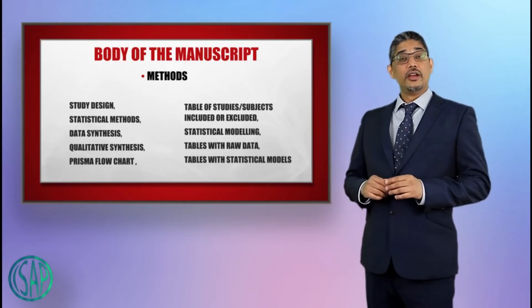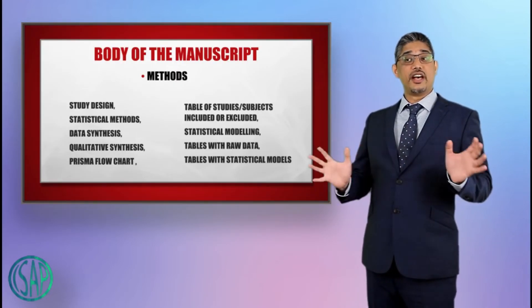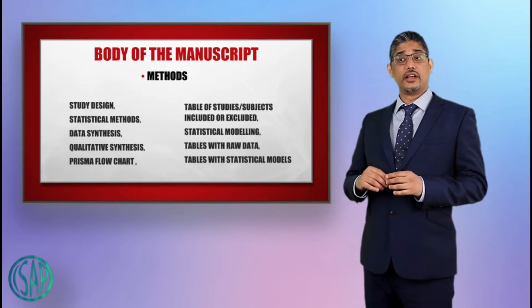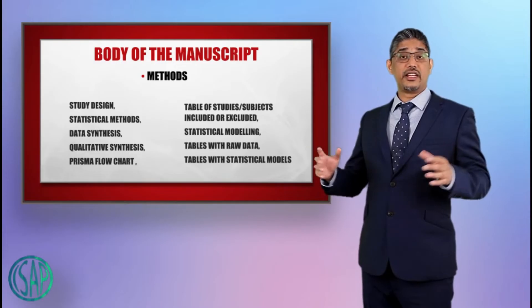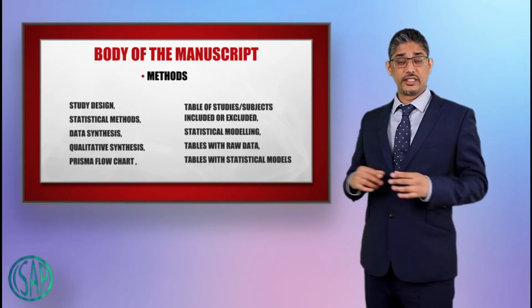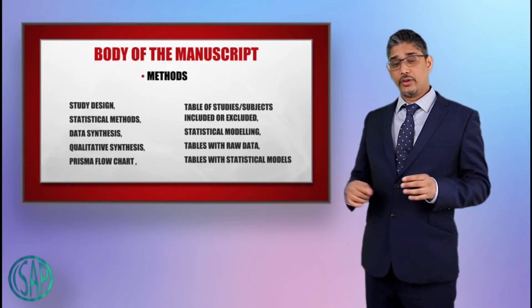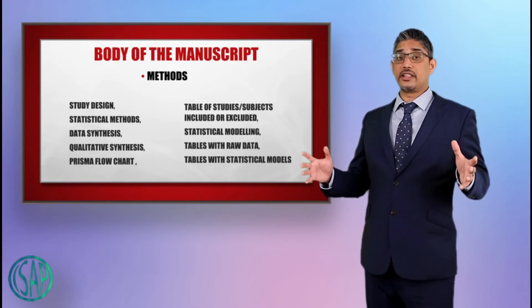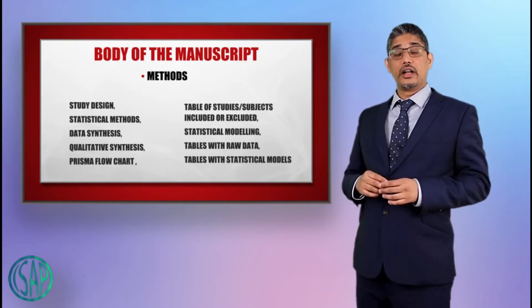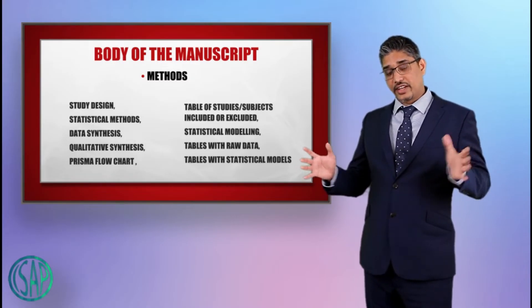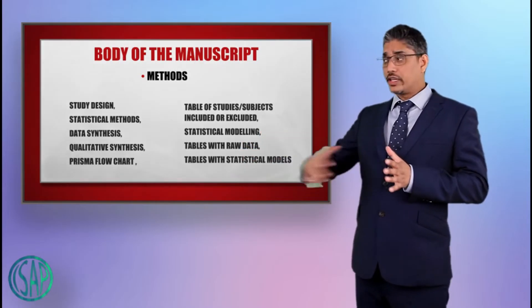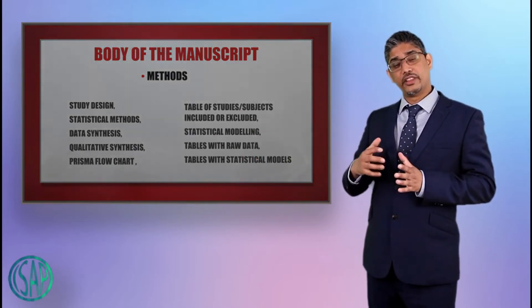In the method section you first talk about study design, study protocol, and then statistical methods. If you have done a meta-analysis, data synthesis. If you've done a systematic review, it's a qualitative synthesis. If you've done a systematic review or meta-analysis, it's a PRISMA flowchart in both, and also summary tables with data extraction. Any quality assessment tables can be incorporated into methodology section.